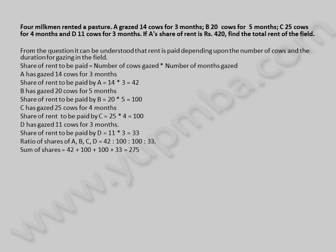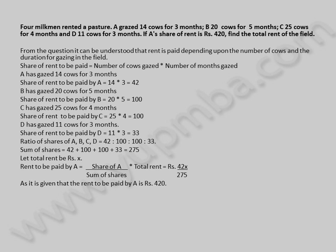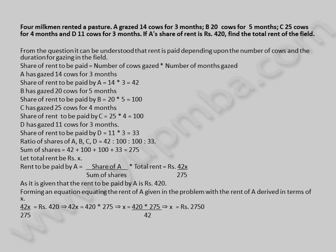Sum of shares is equal to 42 + 100 + 100 + 33 = 275. Let total rent be X rupees. Rent to be paid by A is equal to share of A divided by sum of shares, multiplied by total rent, which equals 42X / 275 rupees. As it is given that the rent to be paid by A is 420 rupees, forming an equation and equating: 42X / 275 = 420 rupees.